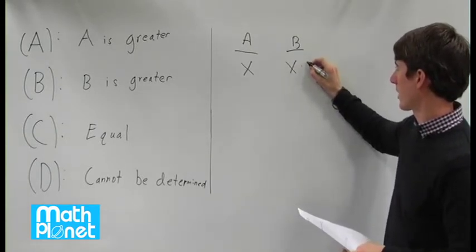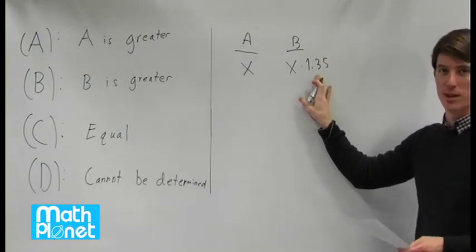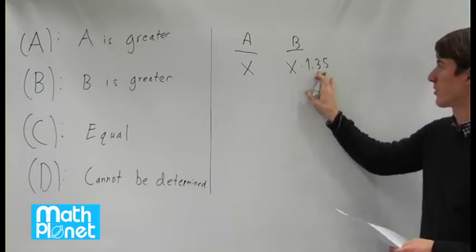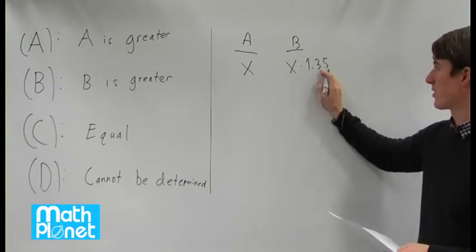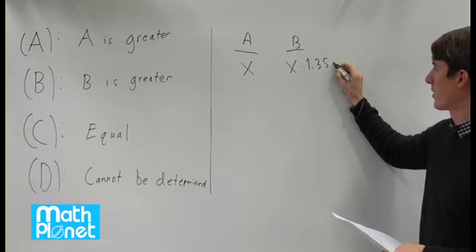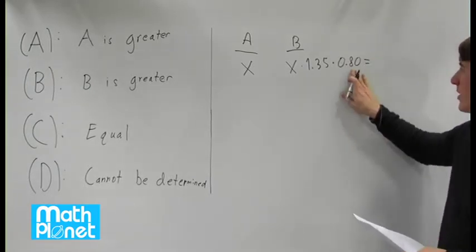The retail price of the TV is X times 1.35, so 35% above X, or 135% of X. This is the retail price of the TV. The sale price is this reduced by 20%, so we need to multiply this by 0.80. This is 20% lower than the initial retail price.